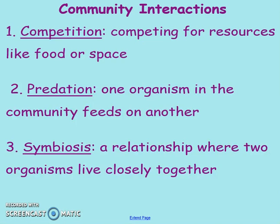When you're looking at the community interactions between living organisms, the first is competition — they're going to be competing for resources like food or space, and if those aren't there, they'll probably leave that environment. The second is predation, where an organism feeds on another, whether it's a plant or an animal. The third is symbiosis, a relationship where two organisms live very closely together, and depending on the type, one of them is going to benefit in some way.